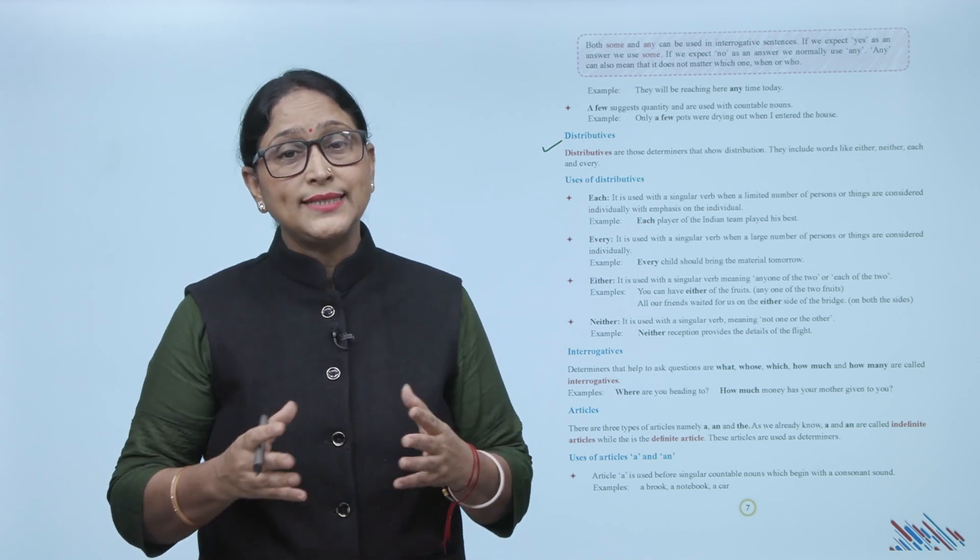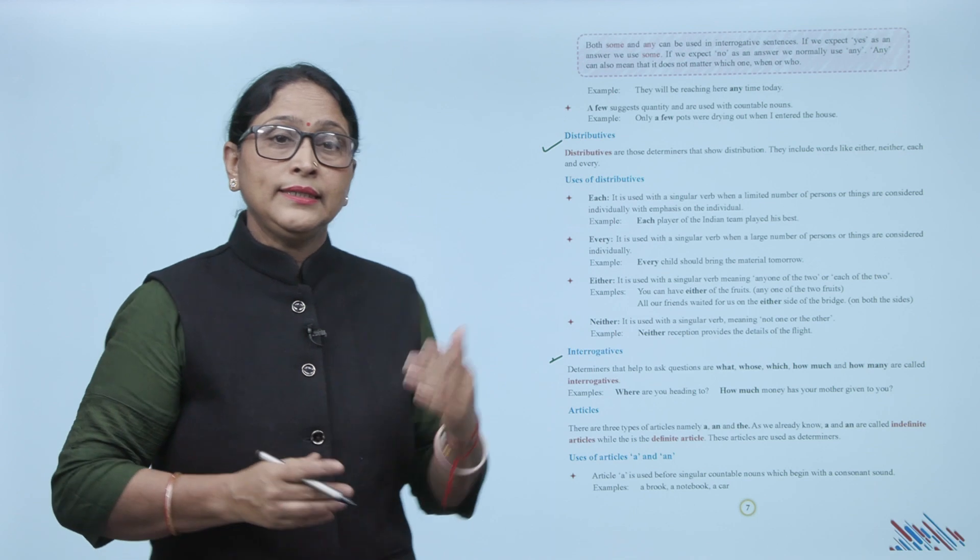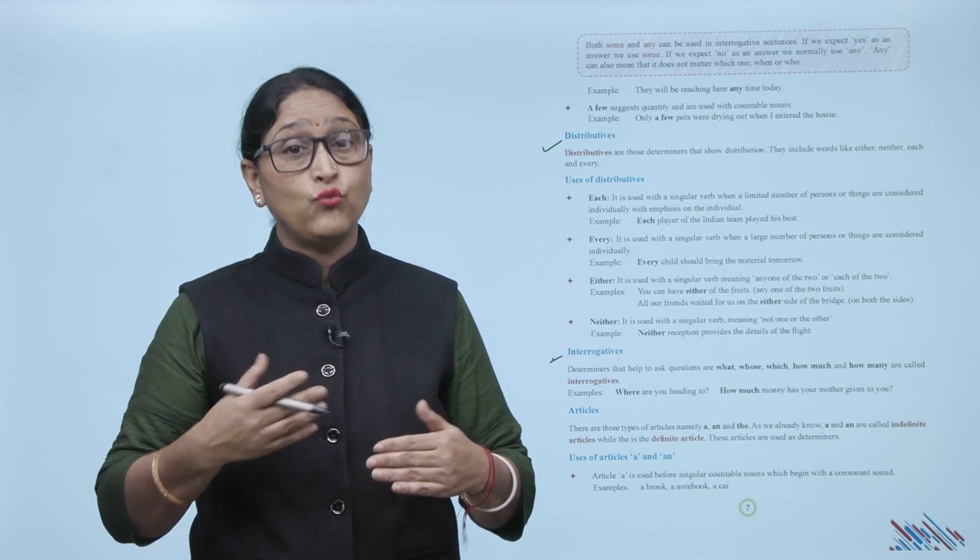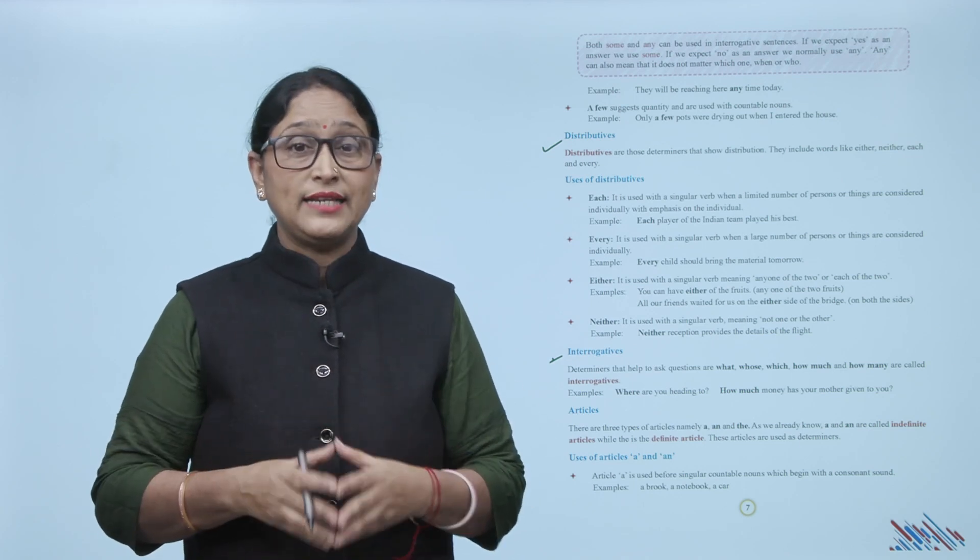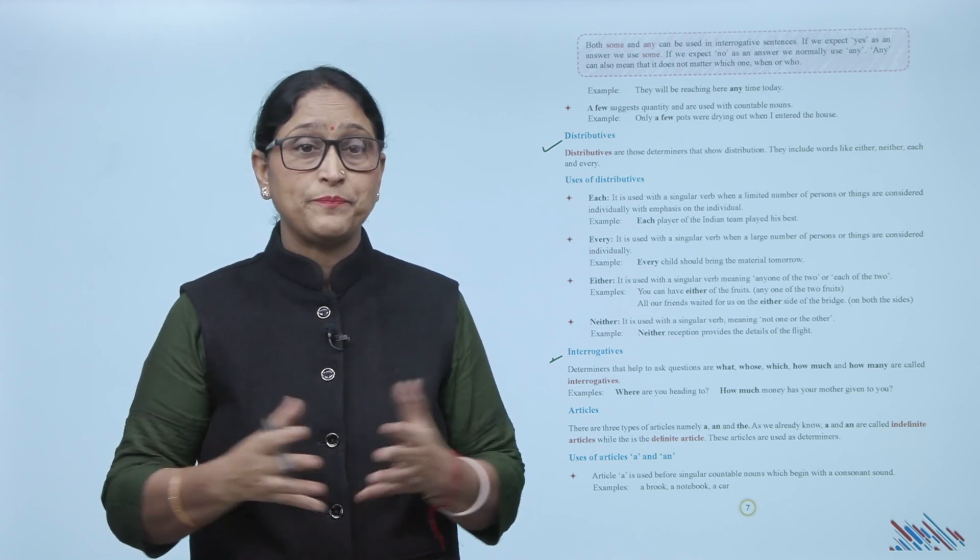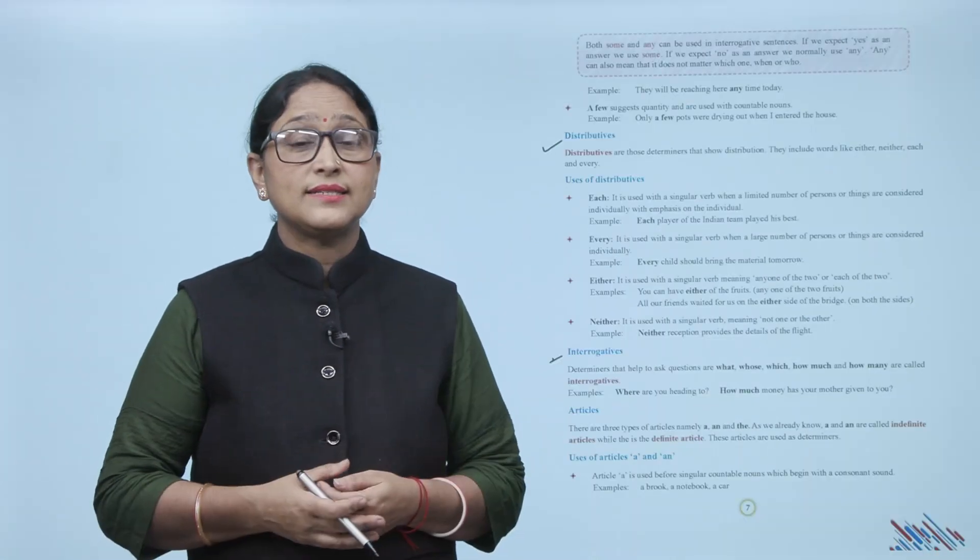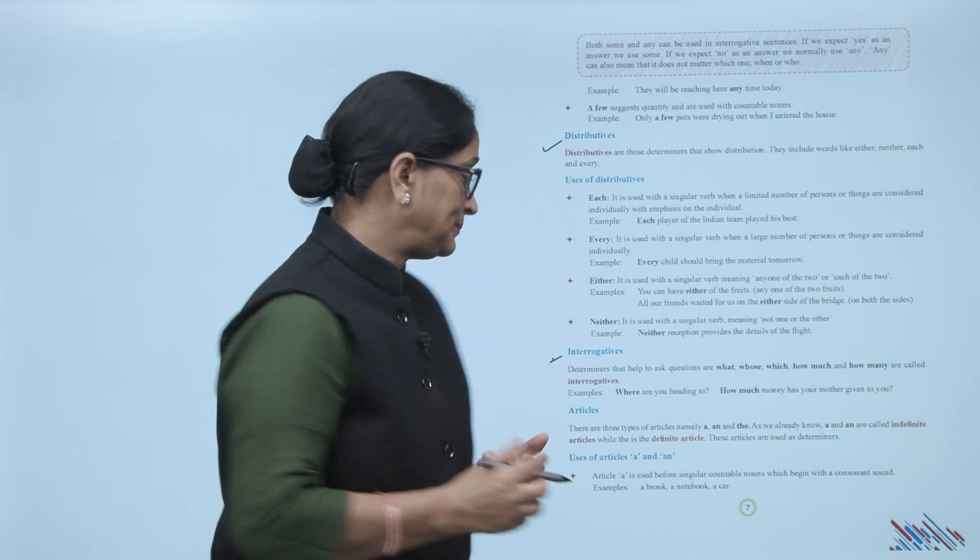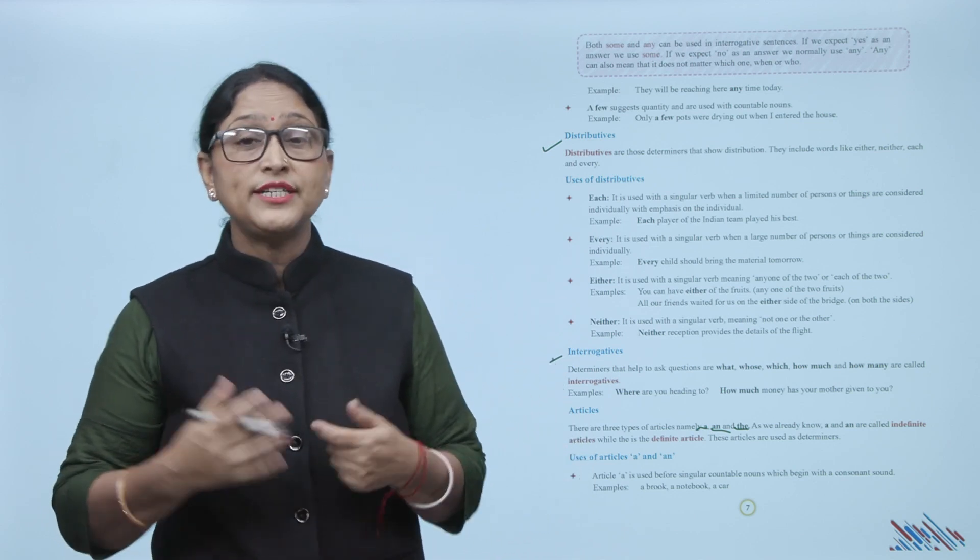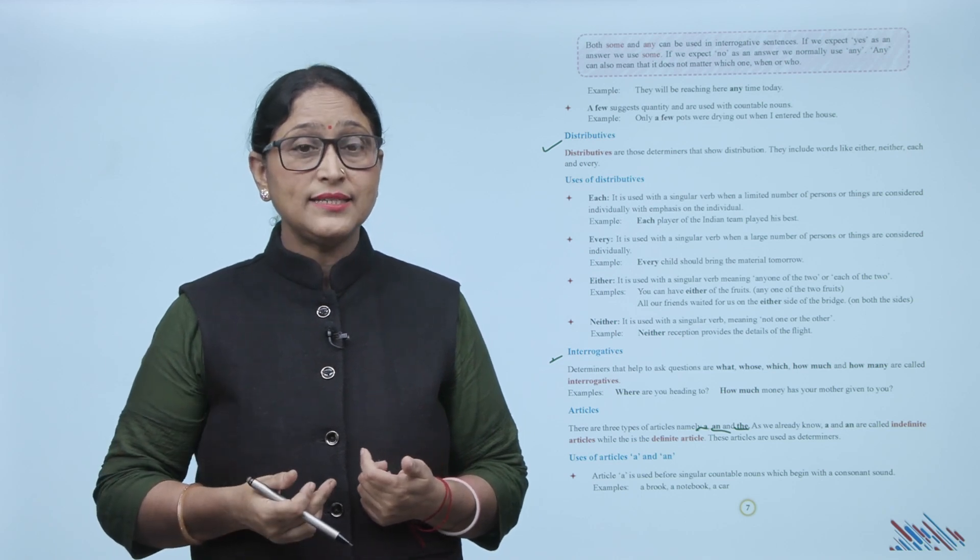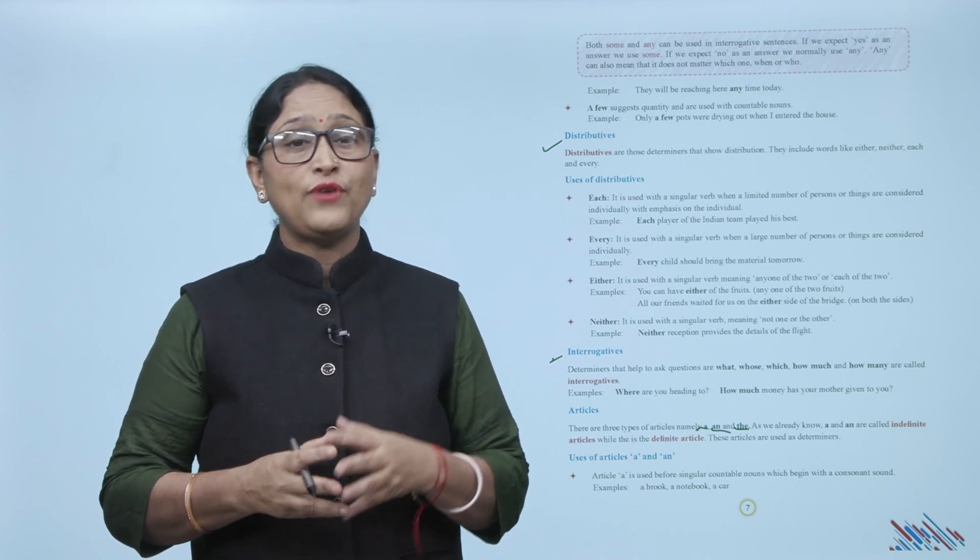Next is interrogatives. Determinants that help to ask questions are what, whose, which, how much, and how many. These are called interrogatives. Examples: where are you heading to? How much money has your mother given to you? Articles: there are three types of articles, namely a, an, and the. As we already know, a and an are called indefinite articles while the is the definite article. These articles are used as determinants.